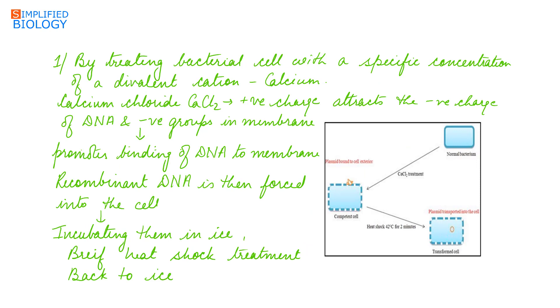The cells can be made competent by treating them with a specific concentration of a divalent cation like calcium. Usually calcium chloride is used and the positive charge of calcium attracts the negative charge of DNA and the negative groups present in the membrane, due to which binding of DNA occurs to the membrane or to the cell wall.